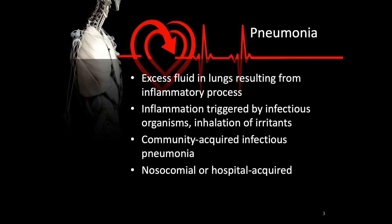Pneumonia can be brought on by organisms from the environment, particularly after natural disasters, devices, equipment, supplies, and other people. Risk factors include bacteria, viruses, mycoplasma, fungi, Rickettsia, protozoa, and helminths, or worms. Non-infectious causes include inhalation of toxic gases, chemical fumes, smoke, and aspiration of water, food, even saliva, and vomitus.